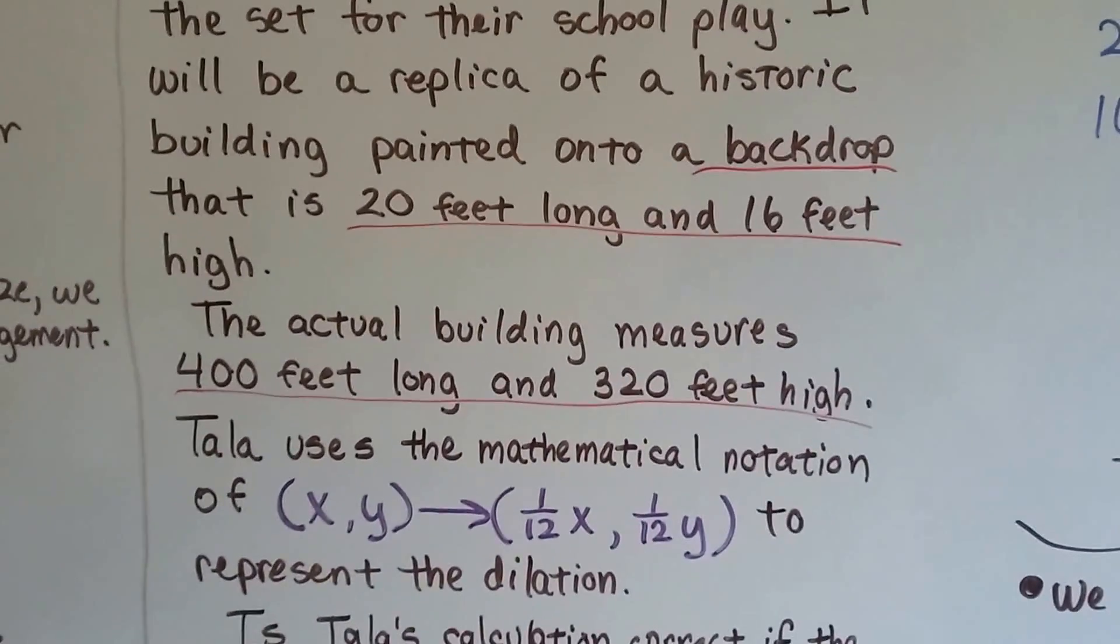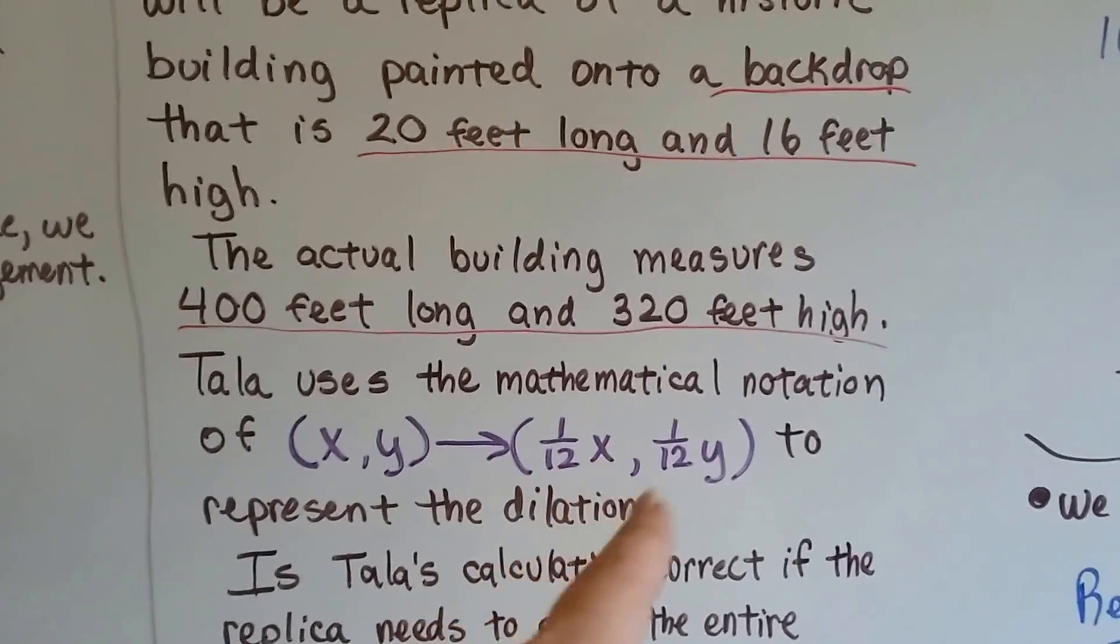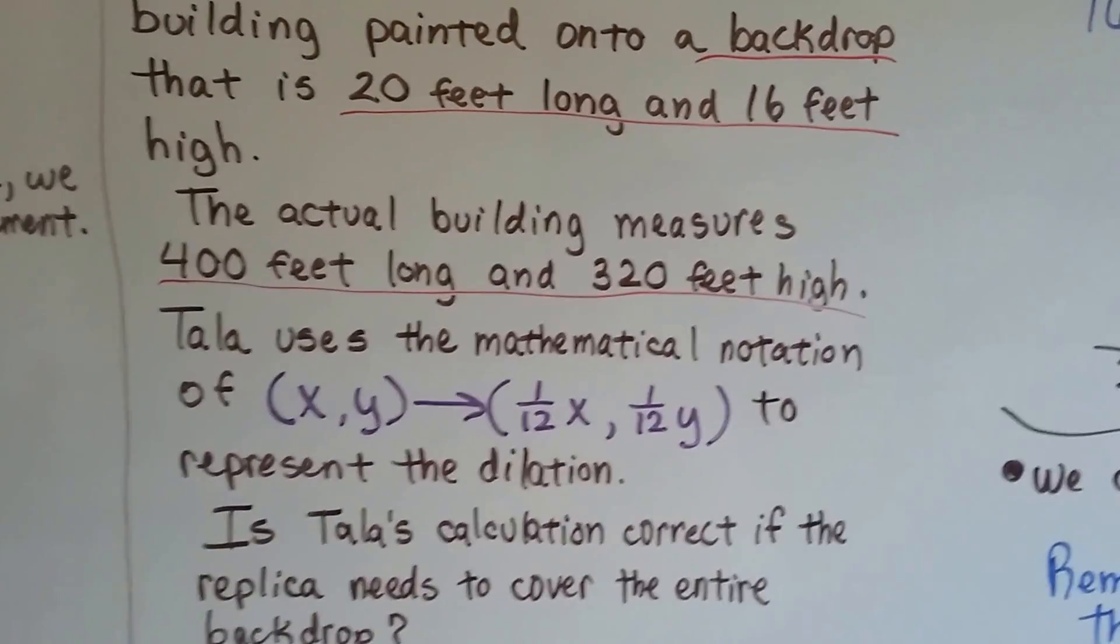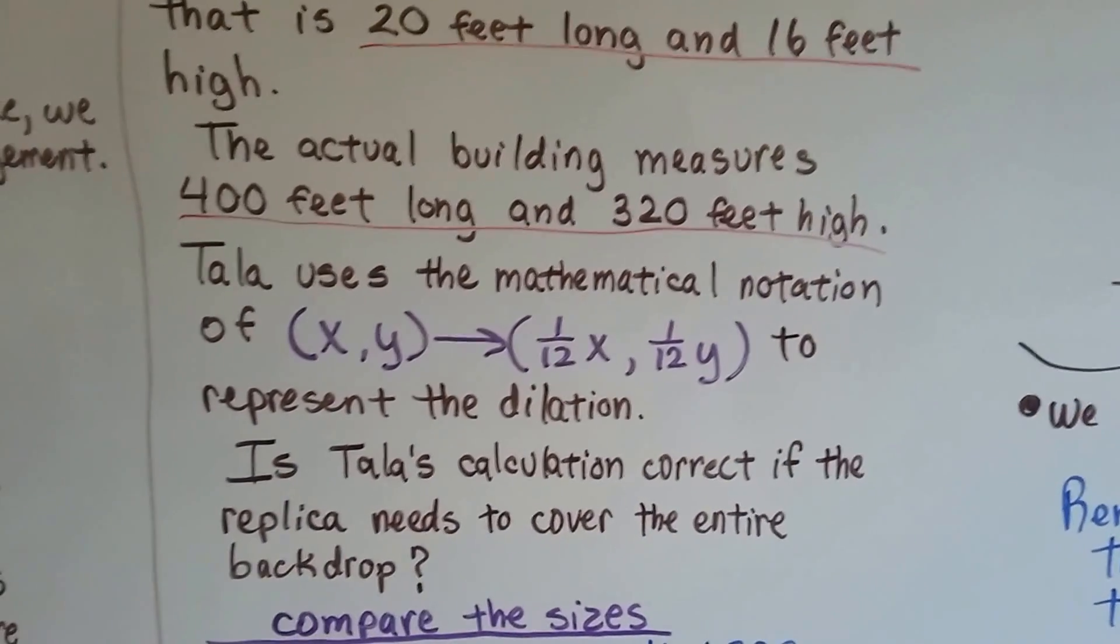Tala uses the mathematical notation of (x,y) becomes (1/12x, 1/12y) to represent the dilation. Was Tala's calculation correct if the replica needs to cover the entire backdrop?